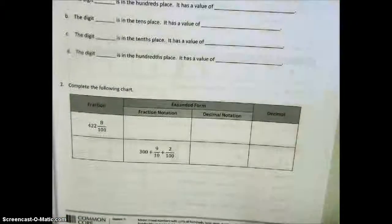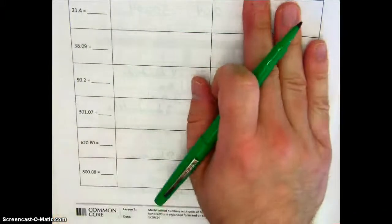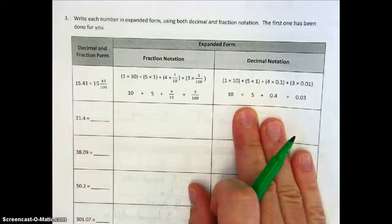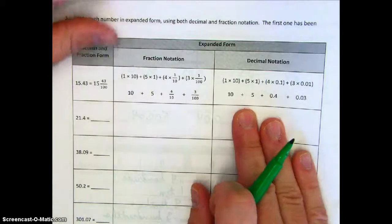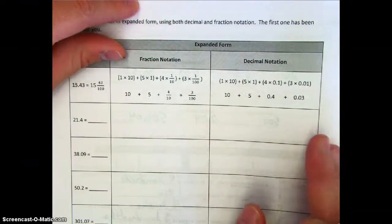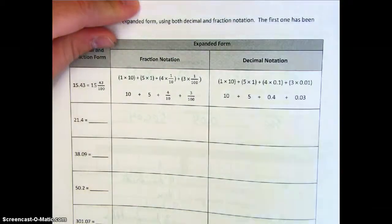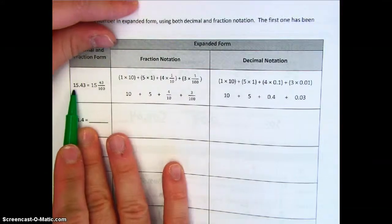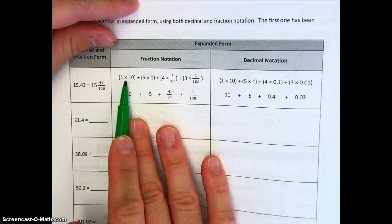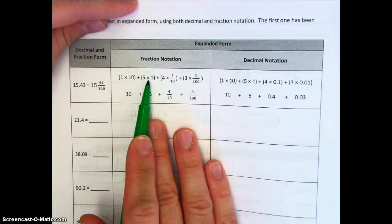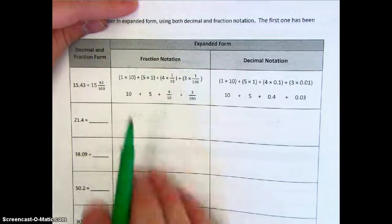Now we see a table where we're going to be taking a decimal and fraction form number, writing it in expanded form using both a decimal and a fraction, and the first one's been done for us. Be very careful with this section — remember that you go one digit at a time. Don't combine the tens and the ones. Go each place at a time. For example, you see that we have fifteen and some decimals — when we write it out in expanded form, it's one times ten, plus five times one, plus four times one tenth, plus three times one hundredth.